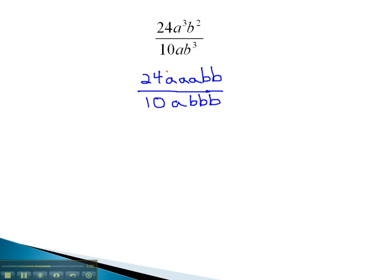When we reduce, we see one of the a's can quickly divide out. A b from the numerator and denominator, another b from the numerator and denominator.